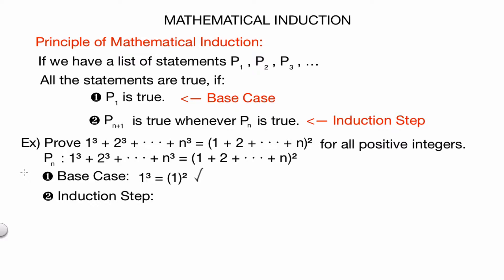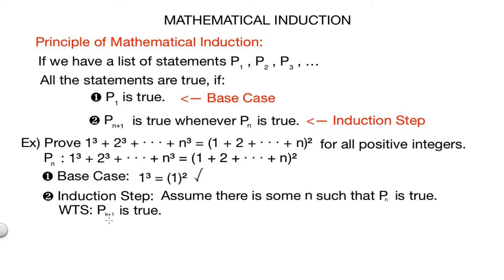The next step is the induction step. With the induction step, we have to assume that there is some n such that p_n is true. Then what we want to do is show that p_(n+1) is true. We need to show that p_(n+1) is true using just the assumption that p_n is true.